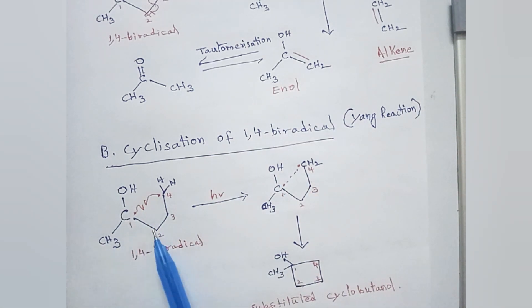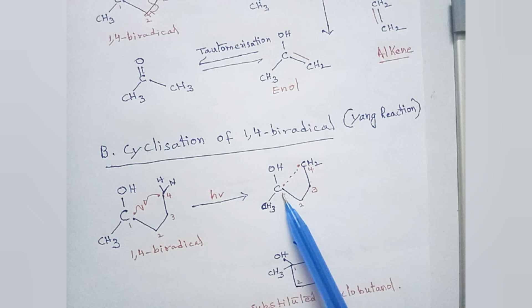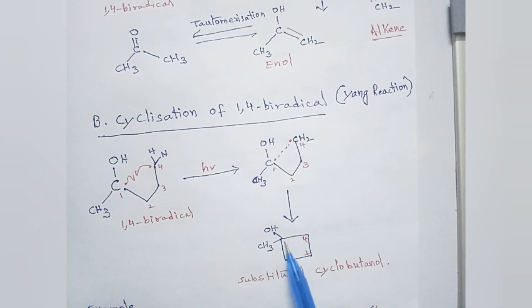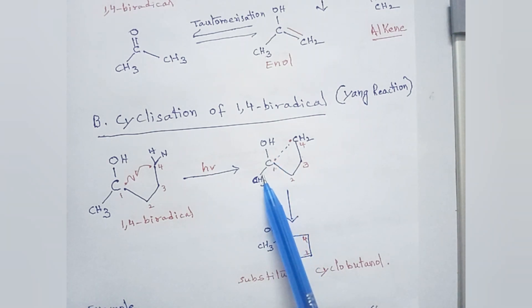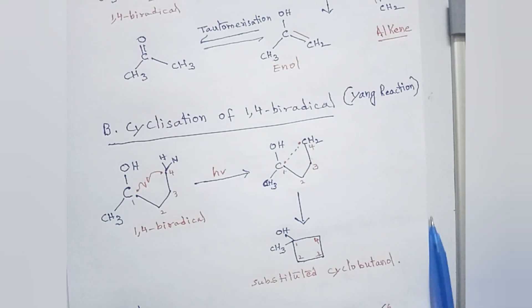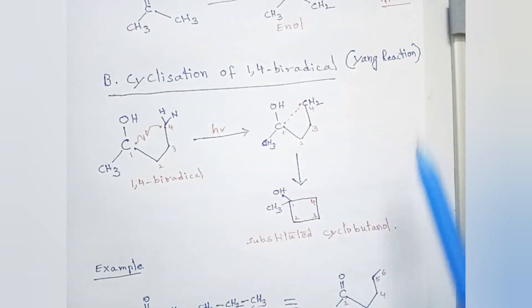In the Yang reaction, the two radicals of the 1,4-biradical — positions 1, 2, 3, 4 — join together to form a bond, giving a cyclic product. The first carbon atom has OH and CH3 attached to it, so we draw OH and CH3 on that carbon. This is substituted cyclobutanol. So, as a result of the Norrish Type 2 reaction, we get one ketone, one alkene, and substituted cyclobutanol.